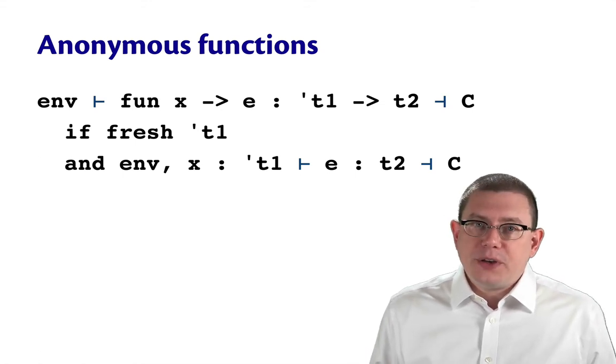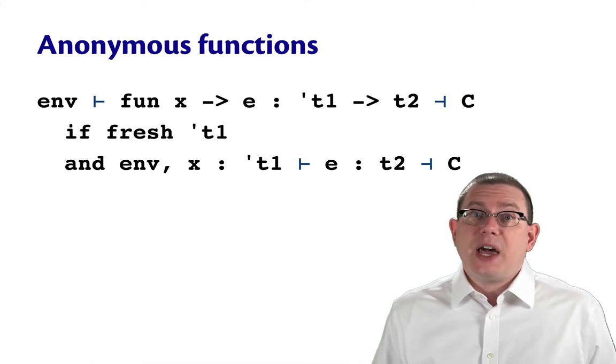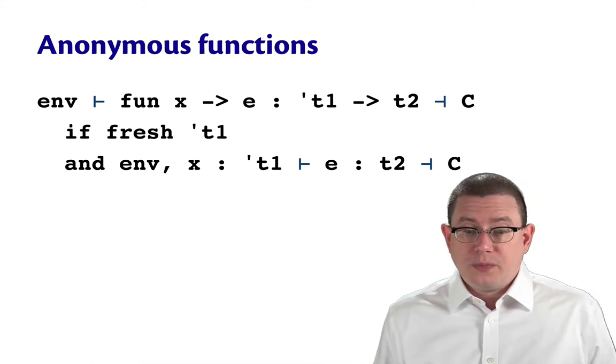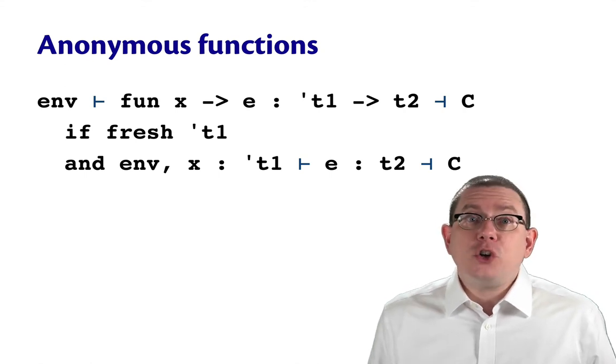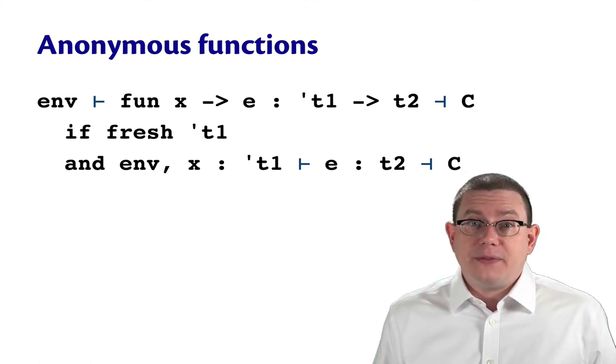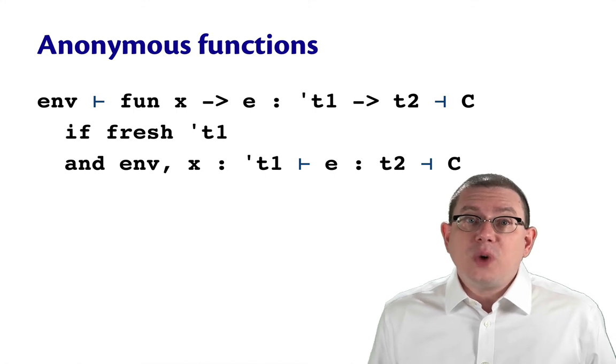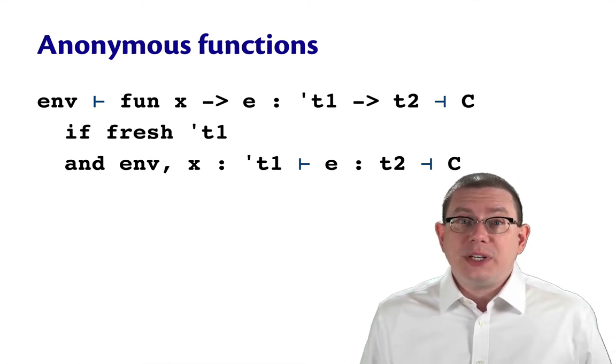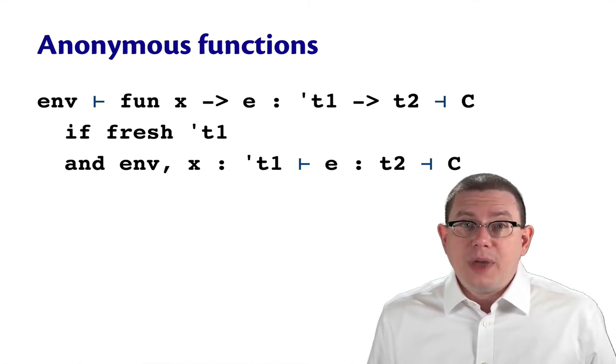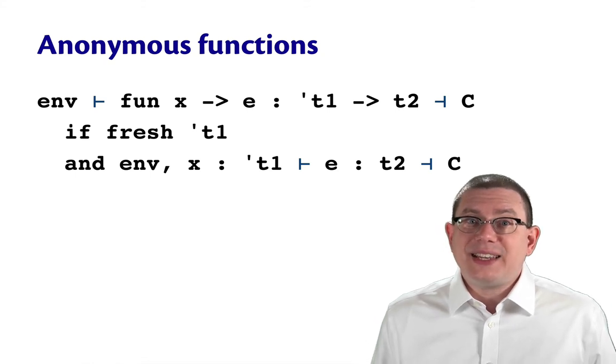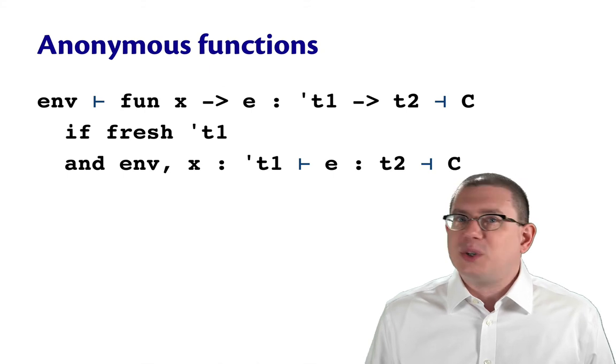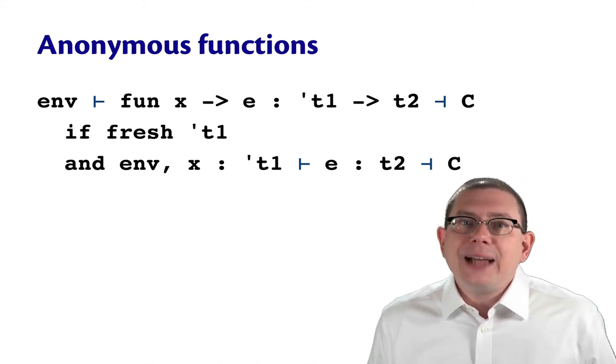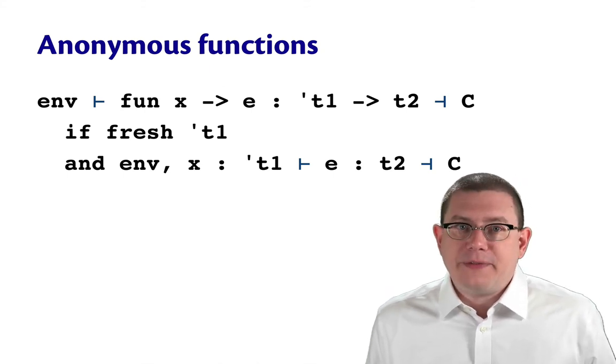Well, type inference of e will eventually return with a type t2 along with a set of constraints. Now, if x is ever used in any interesting way inside of e, that set of constraints will end up talking about tau1. Maybe we'll discover inside of e that x has to be an int or a bool. And so we'll end up with a constraint that says tau1 equals int or tau1 equals bool. That's how we'll figure out the type of that variable.